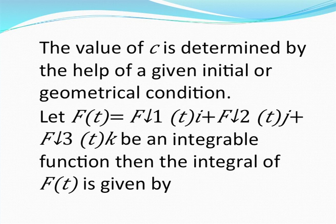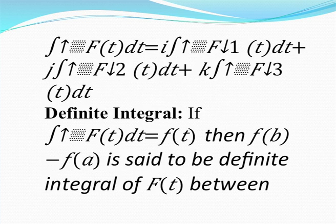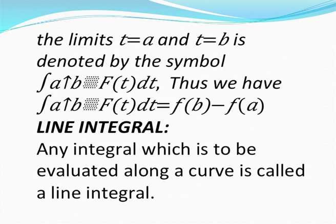Let f of t equal f1(t) i plus f2(t) j plus f3(t) k be an integrable function. Then the integral of f of t dt equals i times the integral of f1(t) dt, plus j times the integral of f2(t) dt, plus k times the integral of f3(t) dt. For the definite integral, if the integral of F of t dt equals f of t, then f(b) minus f(a) is the definite integral between limits t equals a and t equals b, denoted by the integral from a to b of F of t dt.